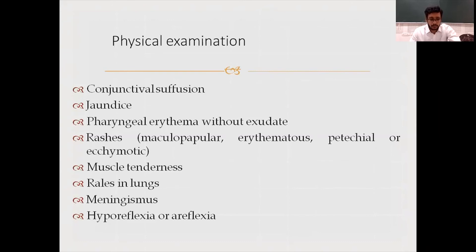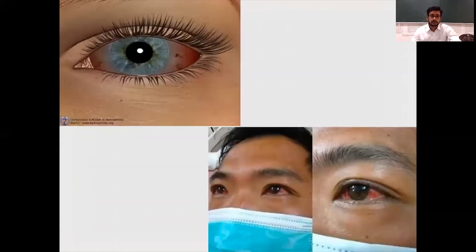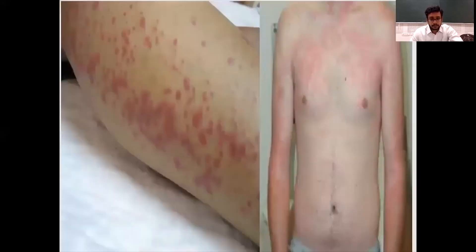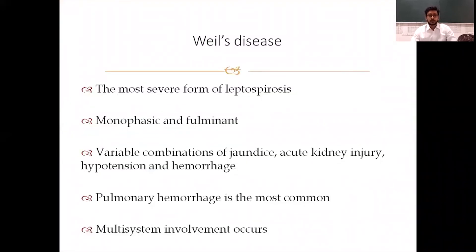Other clinical findings include rales in the lungs (patient will be breathless), meningism (patient may be in a confused state or altered sensorium), hyporeflexia or areflexia, and extreme myopathy — inability to walk or weakness. These pictures show conjunctival suffusion — you can see the redness and conjunctival congestion — and maculopapular or ecchymotic rashes.